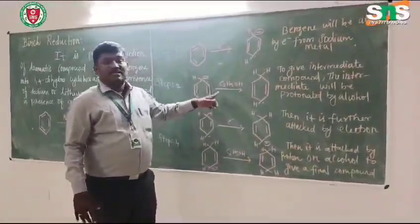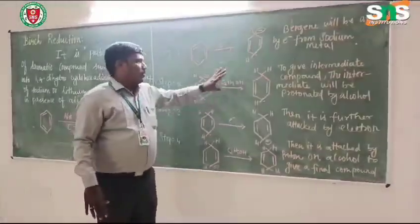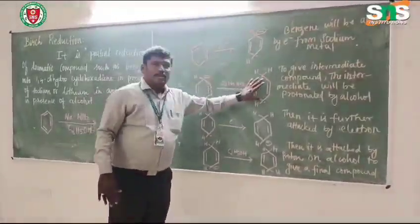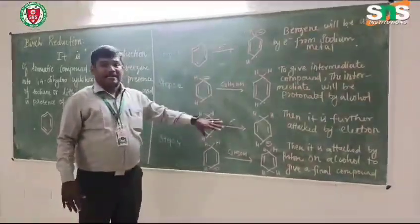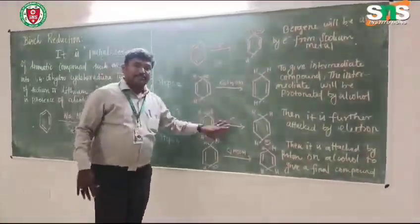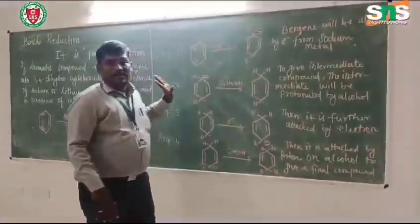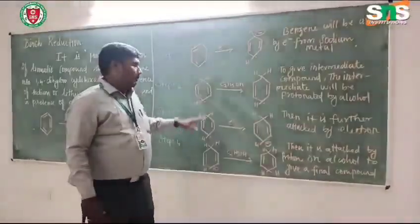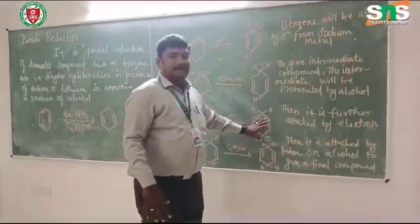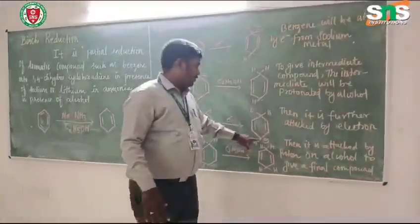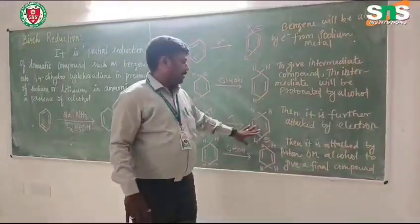This protonation is followed by a further attack of an electron. This electron is again provided by the sodium or lithium metal, giving the next intermediate — a carbanion.